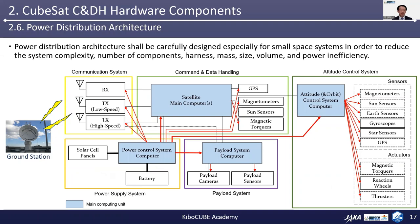Here we can see an updated satellite system electrical architecture together with the possible power distribution architecture included. As an example, the main components could be powered using the unregulated satellite bus voltage, and then the peripheral electronics could be provided power by those main components locally through voltage-regulated power supply lines.